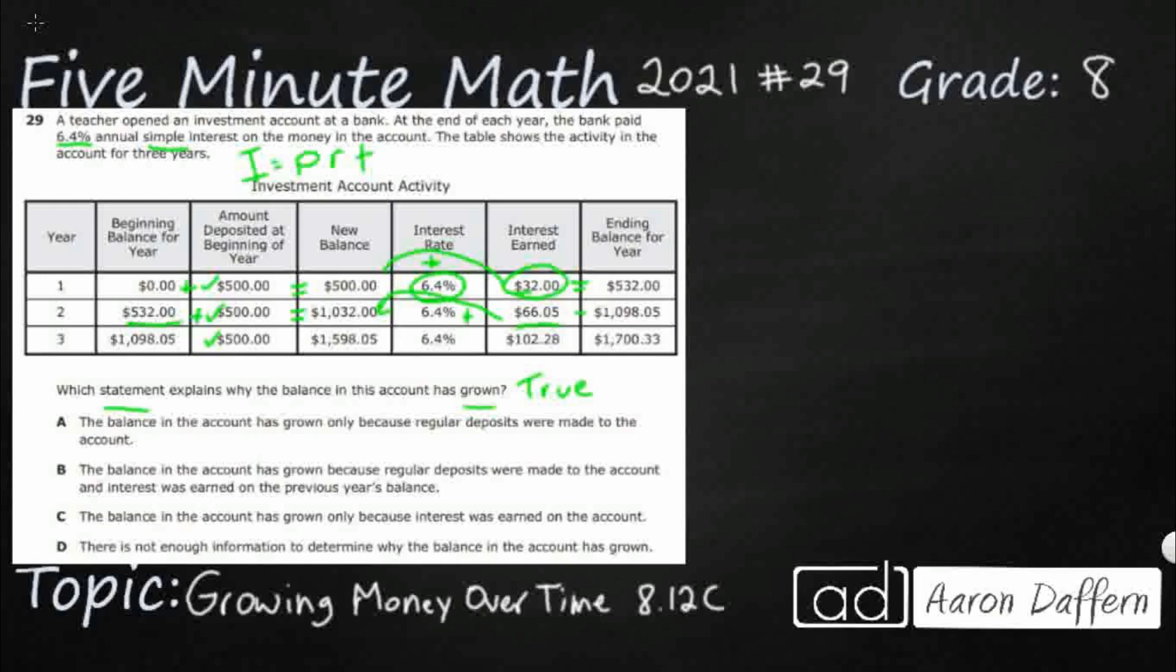Add those two together. Look at that. Now we've got $1,098.05, almost $100 extra. Bring that down here. Add your 500 that you do every year. Now your new principal is $1,598.05. Look at this interest. This interest is going up to $100.